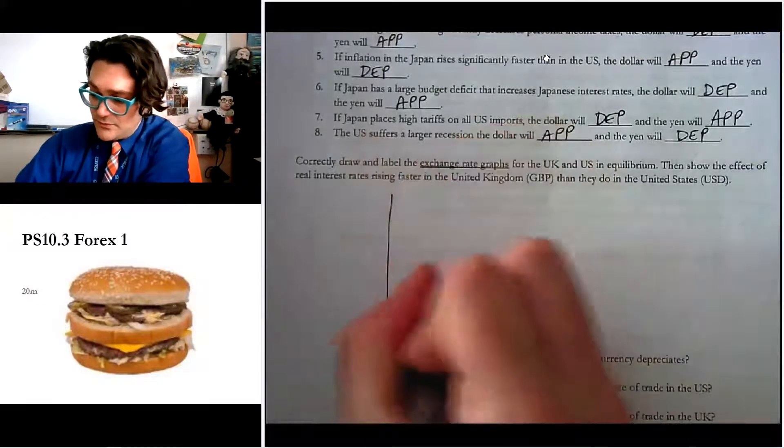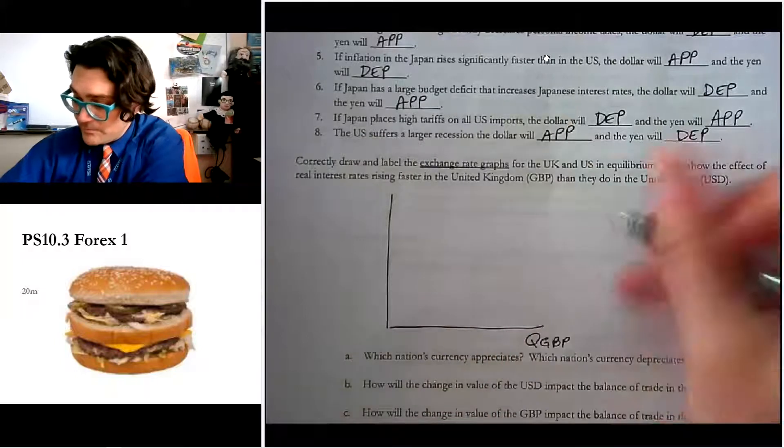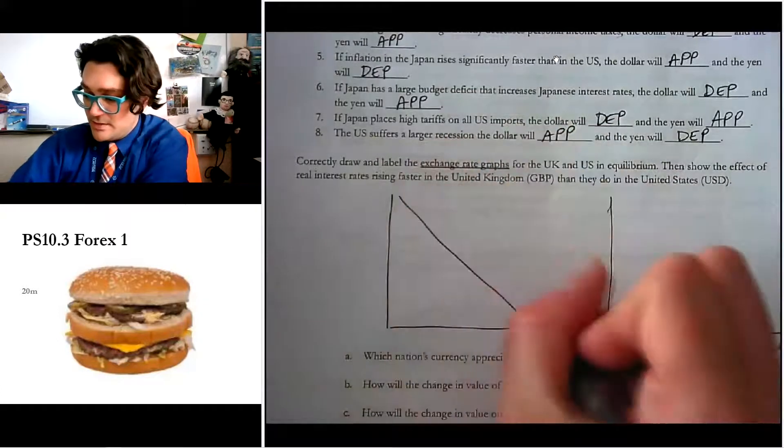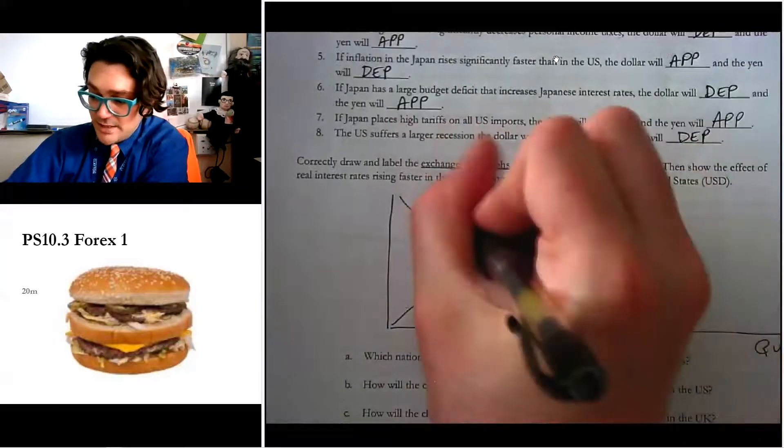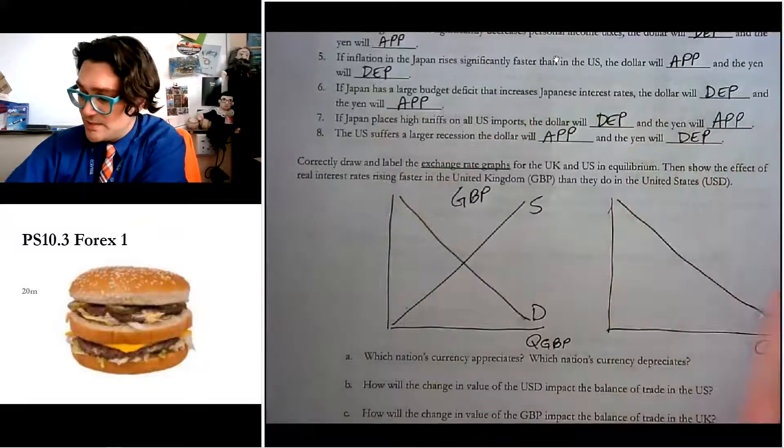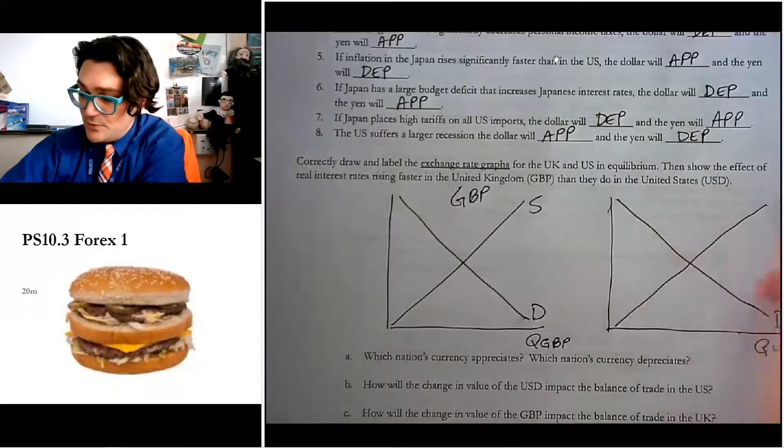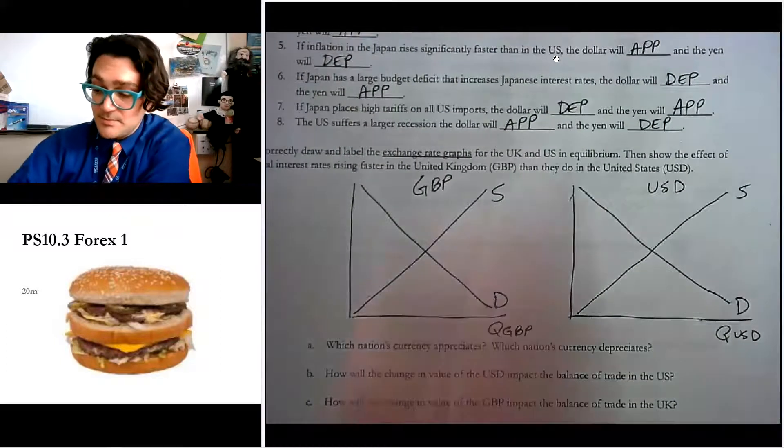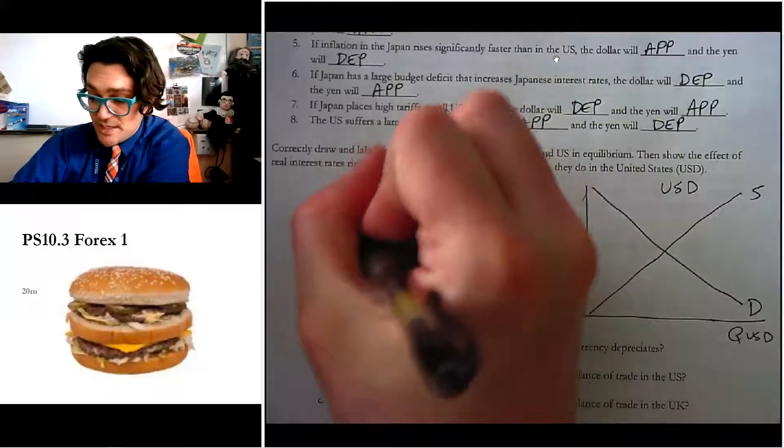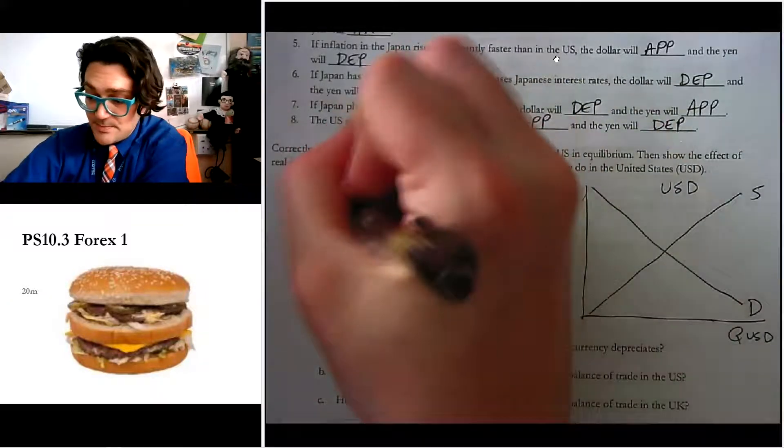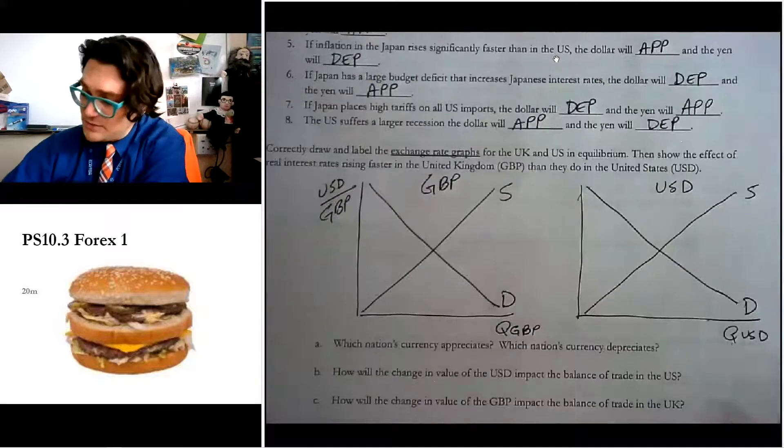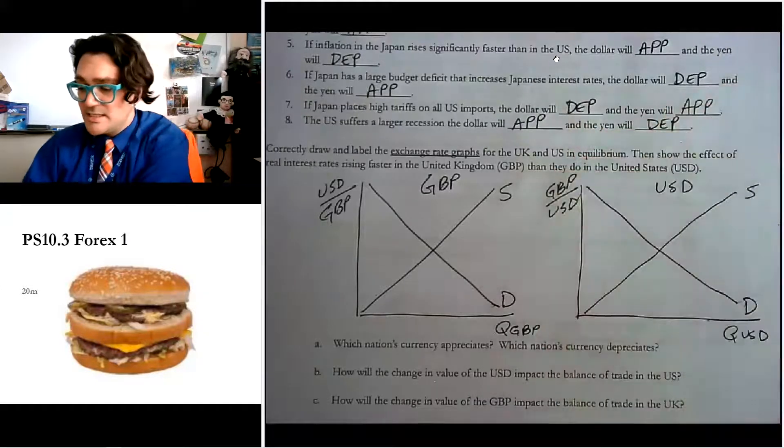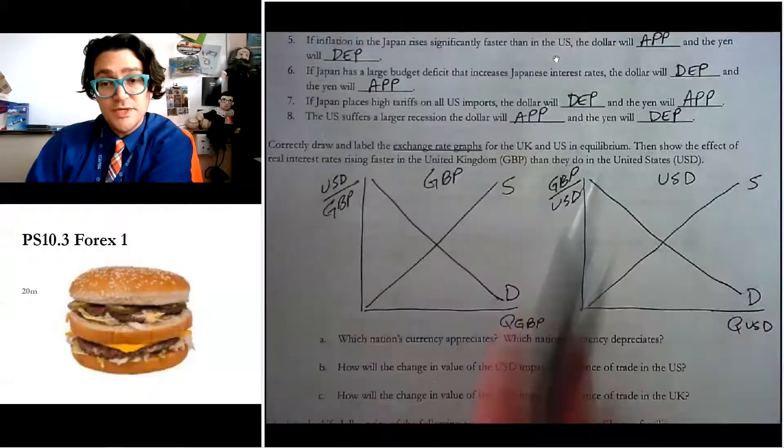So we'll do over here, we have quantity of GBP. And then we have quantity of US dollar. Demand, supply, and always want to label these. We always want to label these because there are going to be two. So we have to know which market is which. Now, remember the trick I taught you of bottom-bottom. So over here, the bottom is going to be GBP because it's at the bottom. So that means the top is US dollars. Over on this side, the bottom is US dollars. So that goes on the bottom. So GBP must go on the top.